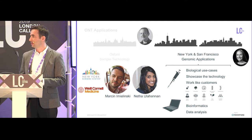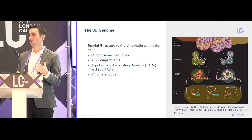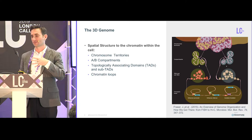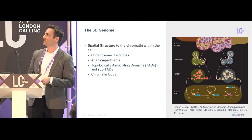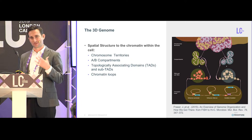Pore-C is a play on Hi-C — it's a method of accessing the 3D genome, an assay to get at the spatial organization of chromatin within the cell. I don't have time to go into all the biology, but within the cell the chromatin is organized into hierarchies of structures: chromosome territories, A/B compartments, topologically associating domains, and chromatin loops. A lot of these features have been discovered through technology advancement — advances in light microscopy and also sequencing. These methods are called chromatin capture.